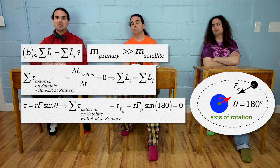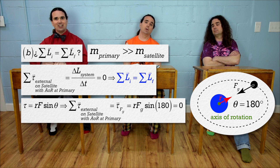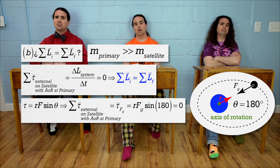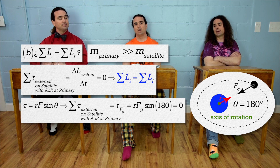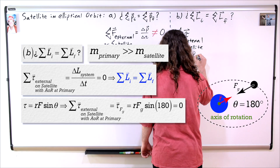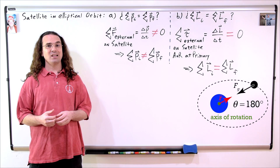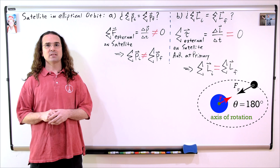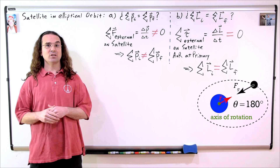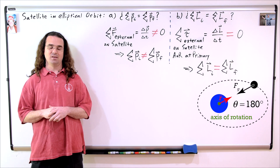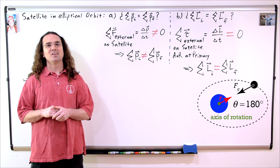So the angular momentum of the satellite about the center of mass of the primary is conserved. Did you really have to identify the axis of rotation so many times? Absolutely — without a clearly defined axis of rotation you cannot define torque or angular momentum. Bobby already said that. And I repeated it because I am awesome. Y'all are correct that the linear momentum of the satellite is not conserved, and the angular momentum of the satellite about the axis of rotation of the center of mass of the primary is conserved.